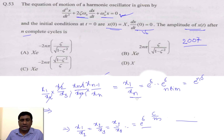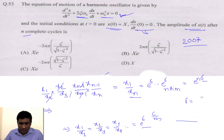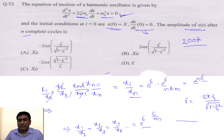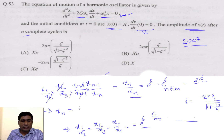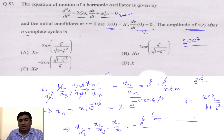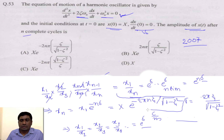We can now find xn. Substituting δ = 2πξ / √(1 − ξ²), we get xn = x₁ × e^(−nδ) = X × e^(−2πnξ / √(1 − ξ²)). This is the final answer, and we can match it to the given options.